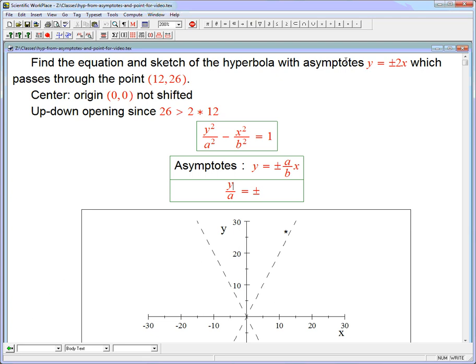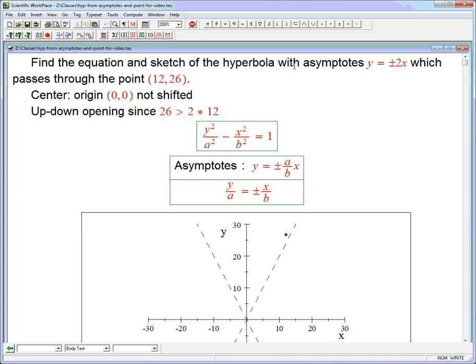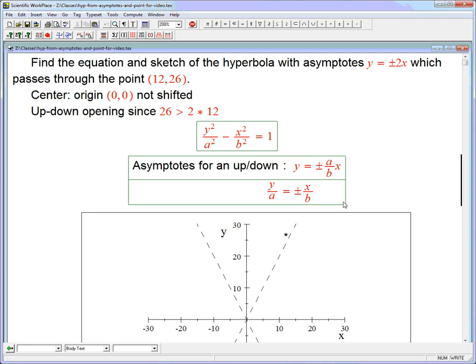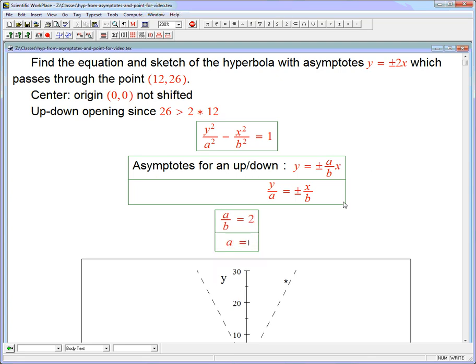Another good way to write it is y over a equals plus or minus x over b. And so it's the same association you have here. Y with a, x with b. So maybe that's an even better way to write it. So this is asymptotes for an up-down. And it's a little annoying that we have to be careful about our a's and b's here. So in other words, a over b is going to have to match 2. So let's write that down. We know that a over b is going to equal 2, or a equals 2b.